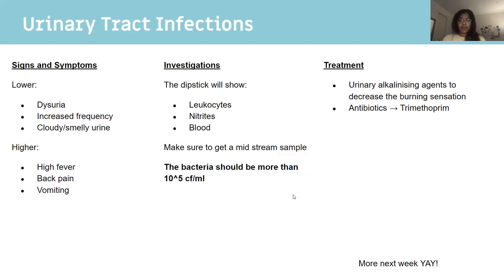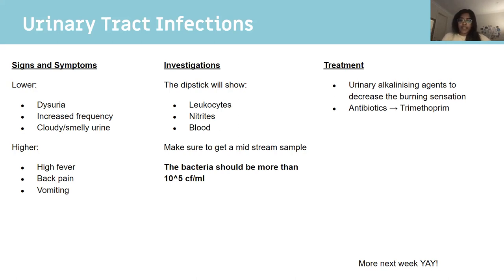UTIs: know the differences between lower and upper urinary tract infections. Lower UTI: dysuria, increased frequency, cloudy or smelly urine. Upper UTI: fever, loin pain, back pain, vomiting, high fever — it's affecting the actual kidney. On dipstick, know these three buzzwords: leukocytes, nitrites, and blood. You need a midstream sample, and the level of bacteria must be more than 10 to the power of 5 for it to be significant.